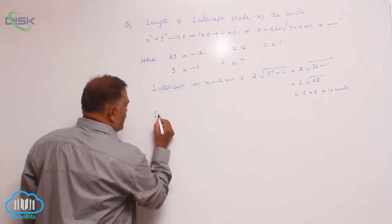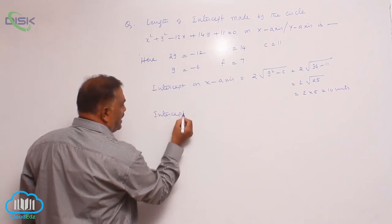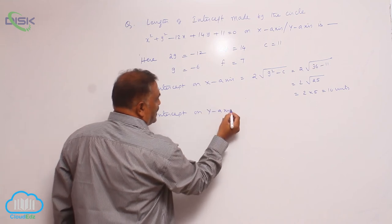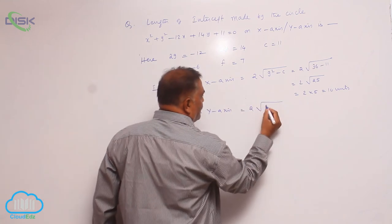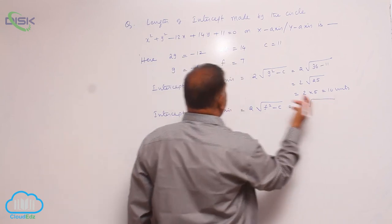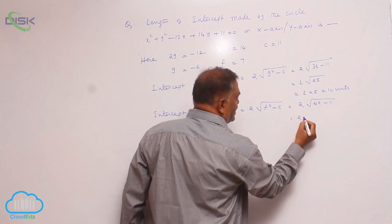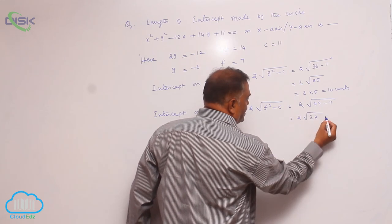Okay. Next, intercept made on y-axis is given by 2 root f square minus c. That's 2 root of 49 minus 11. This is 2 root 38 units.